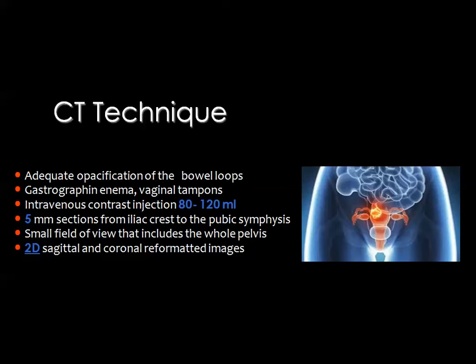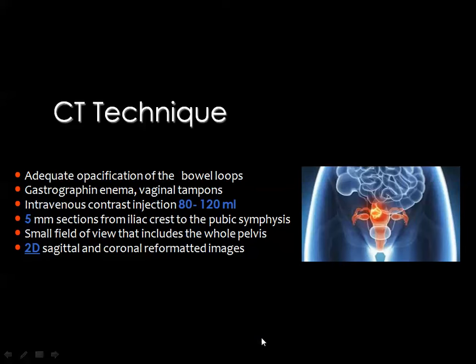To examine the pelvis for male and female we usually use almost the same technique, but in the female patient we need some precautions and preparations so that we are able to adequately delineate the pelvic organs, especially the ovaries, which are somewhat difficult to delineate by CT scan. In the CT technique we use gastrography to opacify the bowel loops, and women need in some specific cases to have gastrography injected into the rectum to opacify the distal part of the colon.